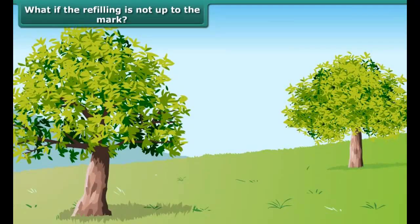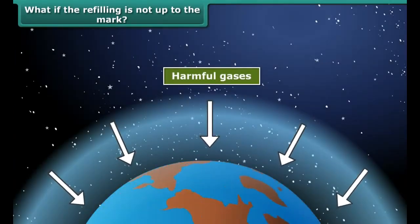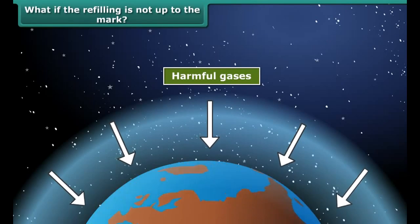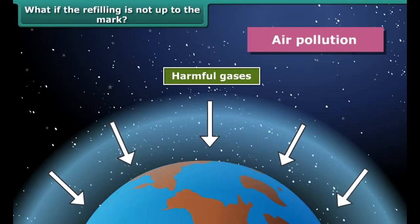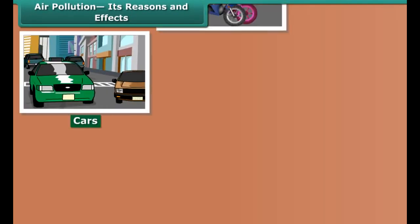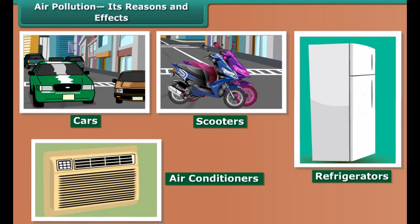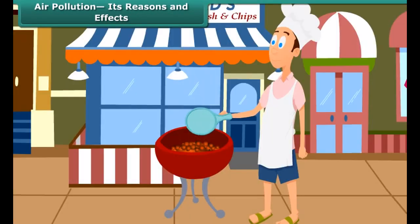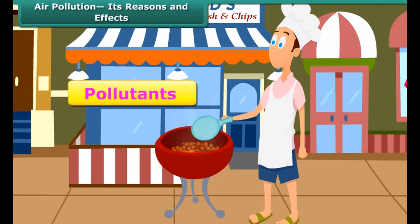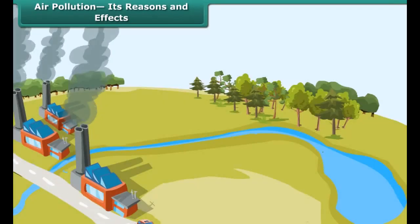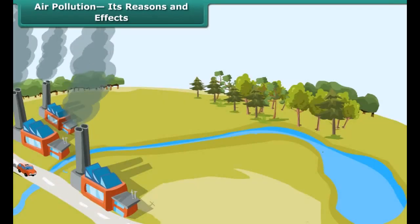What if carbon dioxide is pumped into the atmosphere beyond the capacity of plants to maintain the carbon dioxide-oxygen balance? What if other harmful gases are released into the atmosphere? The answer is: it results in air pollution. Cars, scooters, air conditioners, refrigerators, and many other things release harmful gases that pollute air. The enormous amount of carbon dioxide formed during burning of coal also pollutes air. The substances that cause air pollution are called pollutants — mainly gases discharged from industry and motor vehicles.